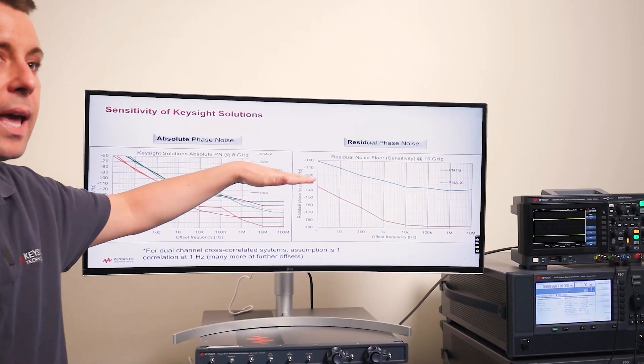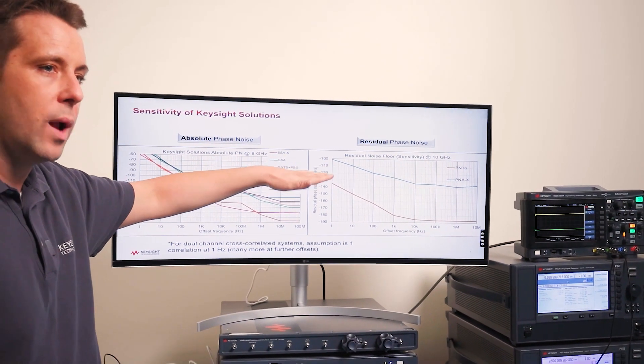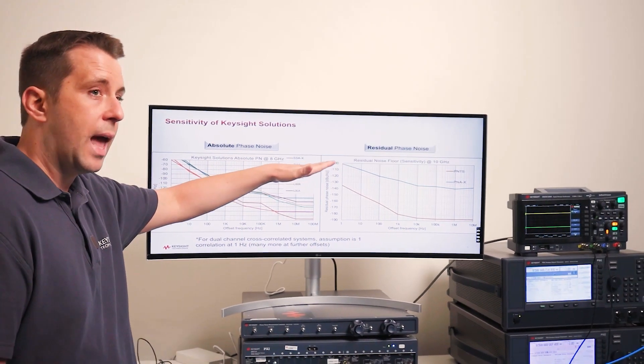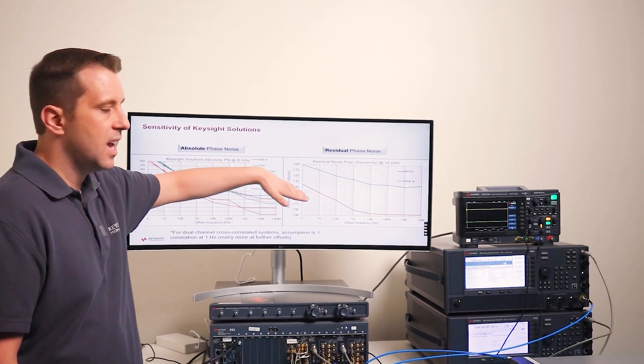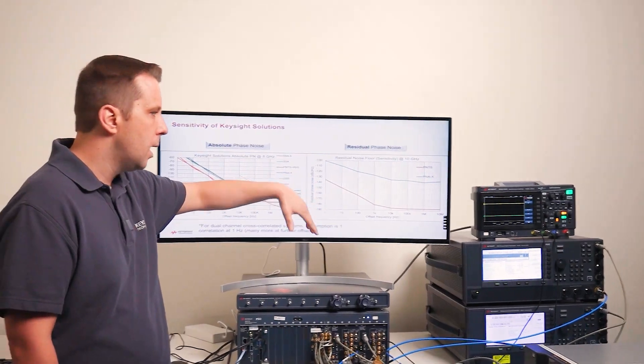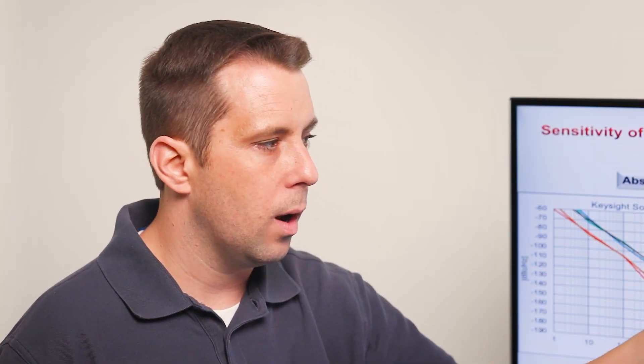If you have really high performance amplifiers or any kind of component that you need to make an additive noise measurement on, the PNTS is far and away the better solution. The PNAX is great for mid-performance devices, or if you already need a network analyzer for any other two-port measurements that network analyzers are designed to do.